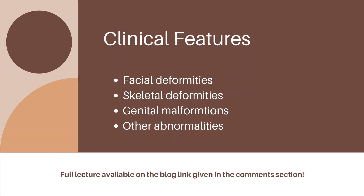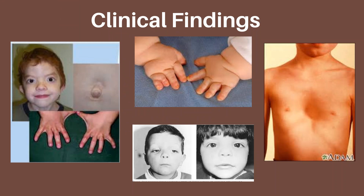Facial deformities: the most common ones are rounded face with broad forehead, widely spaced eyes — also known as ocular hypertelorism — drooping or ptosis of the eyelids, maxillary hypoplasia, low-set ears, and thickened fleshy earlobes.